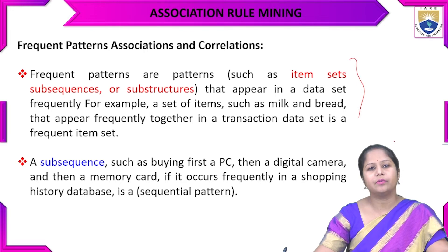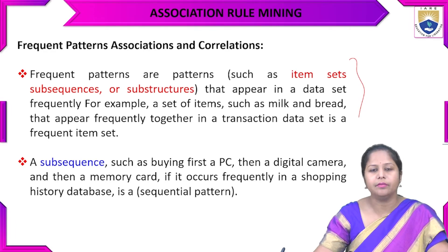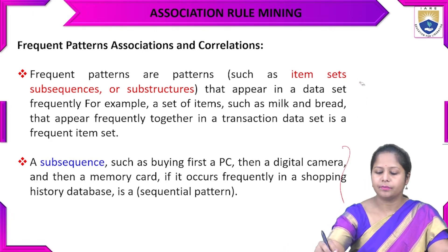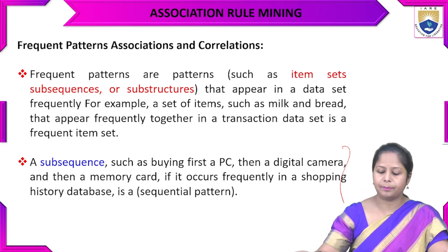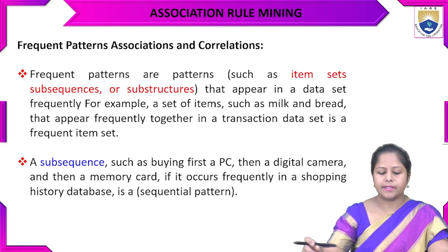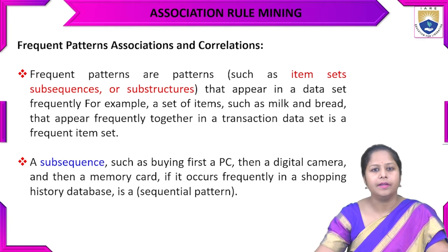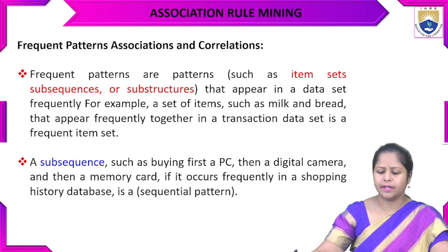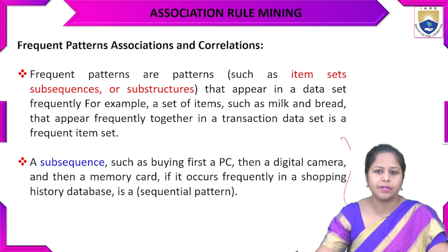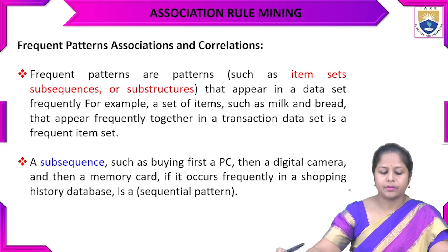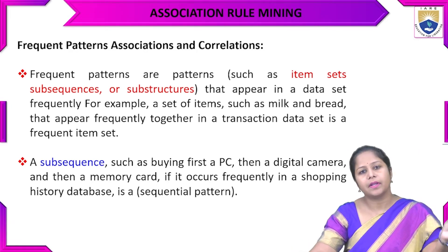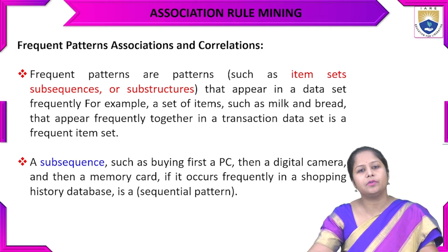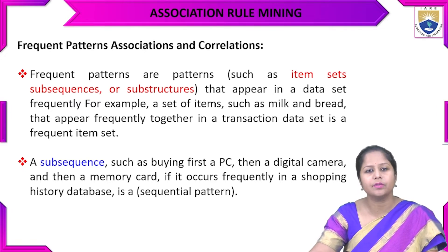There was an example: while we are going to purchase milk, the probability that we are going to purchase bread also in one transaction. What is a subsequence? A subsequence such as buying first a PC, then a digital camera, then a memory card — if there is a frequent occurrence of this shopping pattern in the database, that will be a subsequential pattern. If the probability of one item set depends on two or three consequences or subsequences, that will be a frequent subsequence of the database.